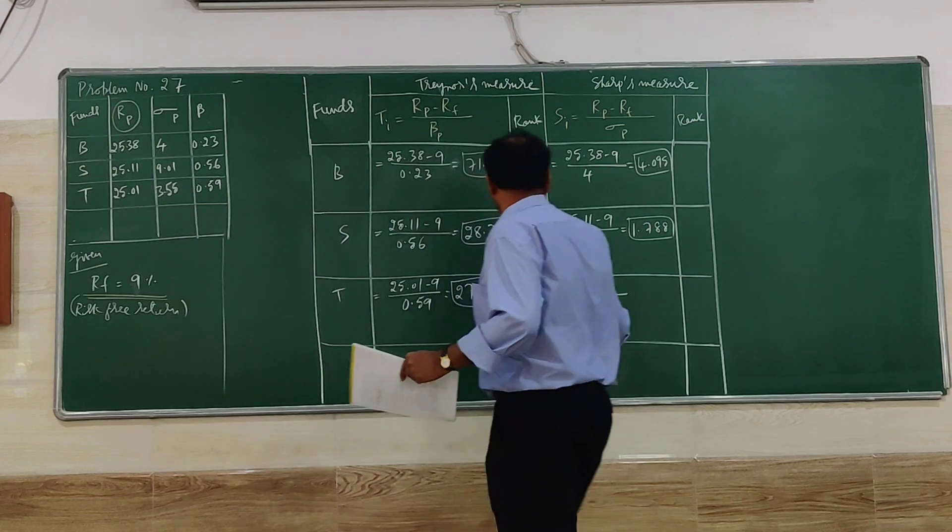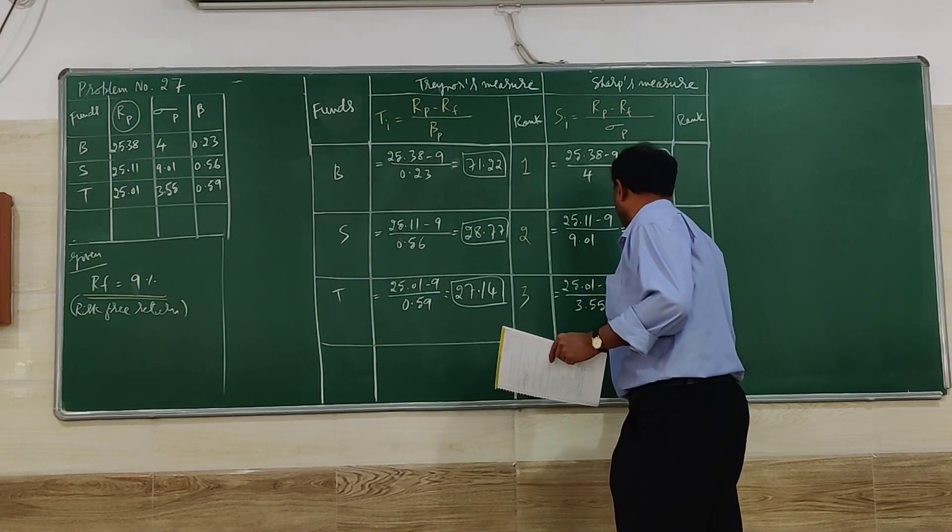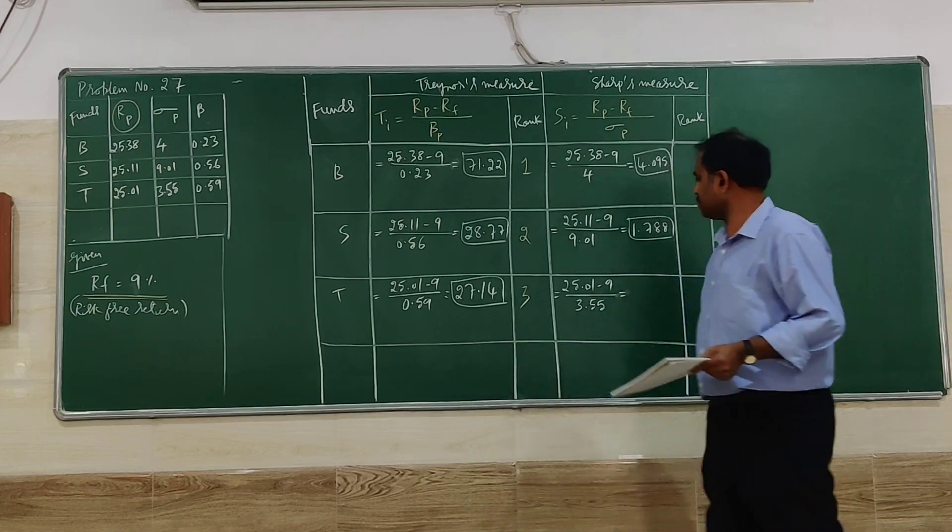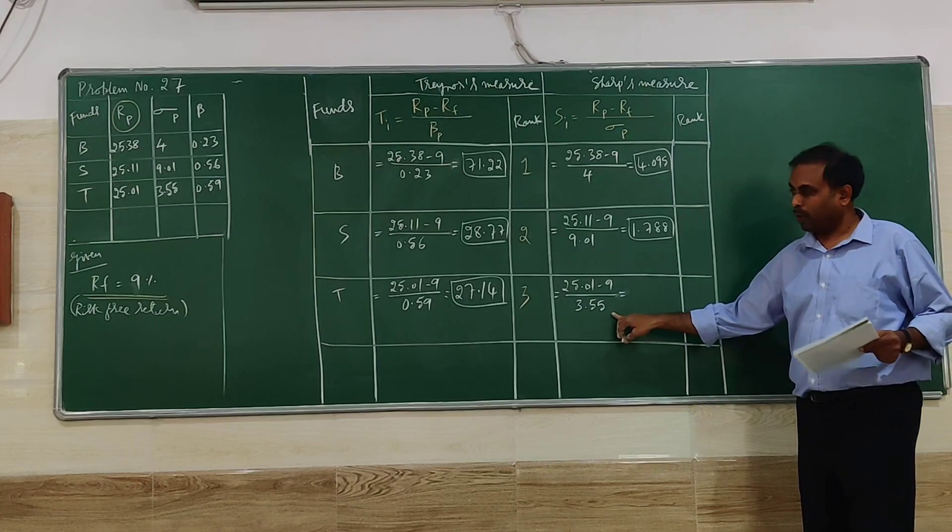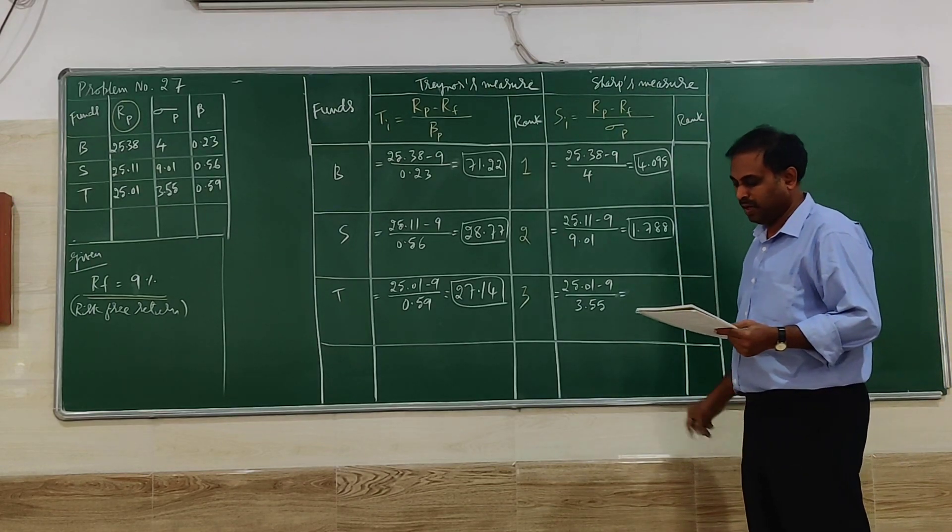Next one, for the last portfolio, I have to take the standard deviation value as the denominator. So 25.01 minus 9 divided by 3.55 will give 4.51.